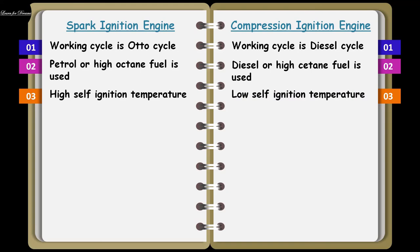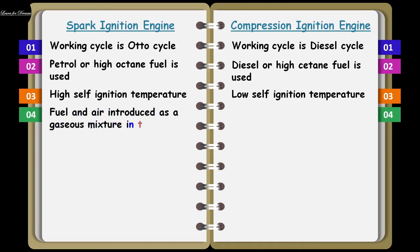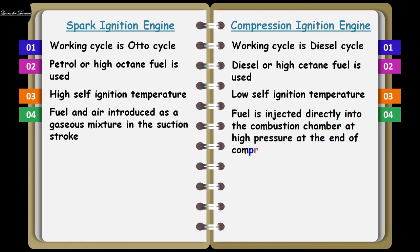Next one is self-ignition temperature — it is high in case of spark ignition engine and low in case of compression ignition engine. Next is the type of mixture — in spark ignition engine, a fuel and air mixture is introduced into the combustion chamber, but in case of compression ignition engine, the fuel is injected directly into the combustion chamber where it mixes with compressed air and combustion occurs. The combustion phenomena is very much different in SI and CI engines.